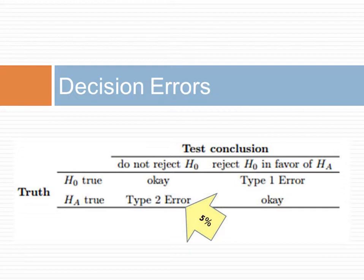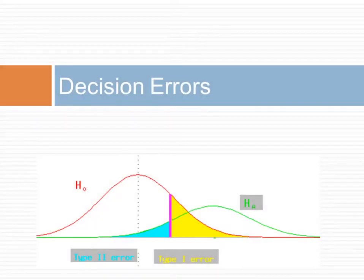Hypothesis testing is built around rejecting or failing to reject the null hypothesis. We do not reject the null hypothesis unless we have strong evidence. As a general rule of thumb, for those cases where the null hypothesis is actually true, we do not want to incorrectly reject the null hypothesis more than 5% of the time. This corresponds to a significance level of 0.05. We often write the significance level using the Greek letter alpha. Alpha often indicates the extent of type 1 errors.